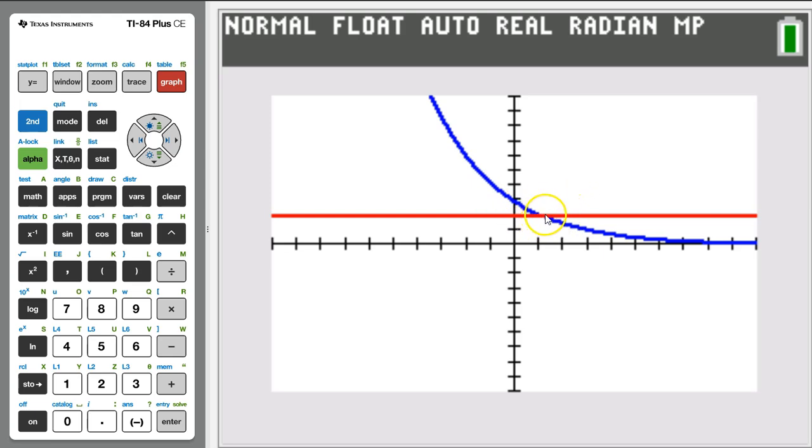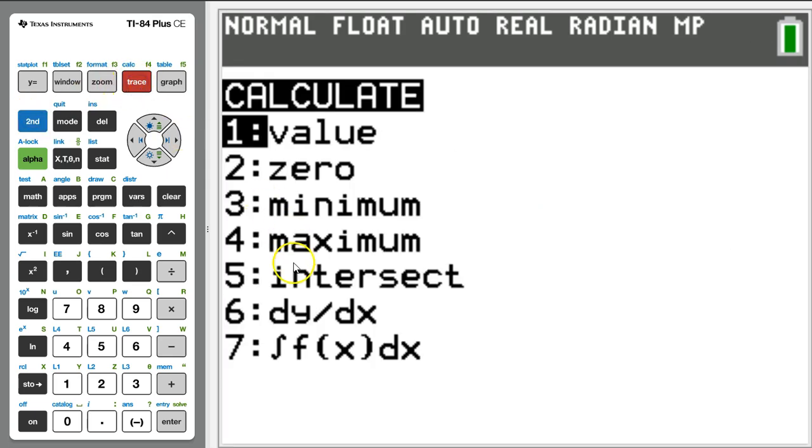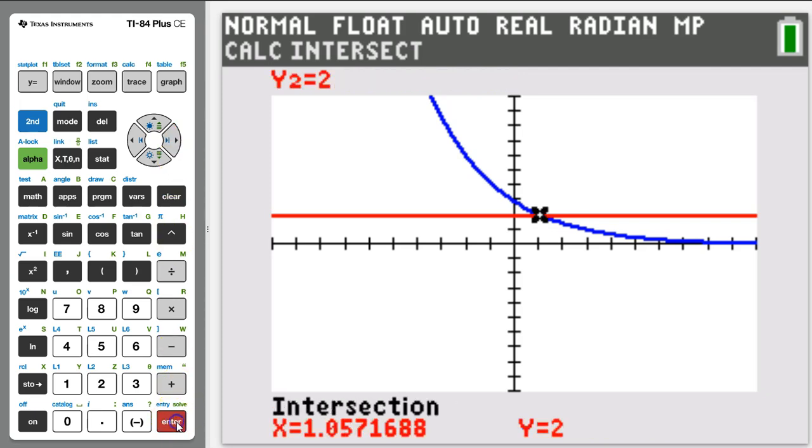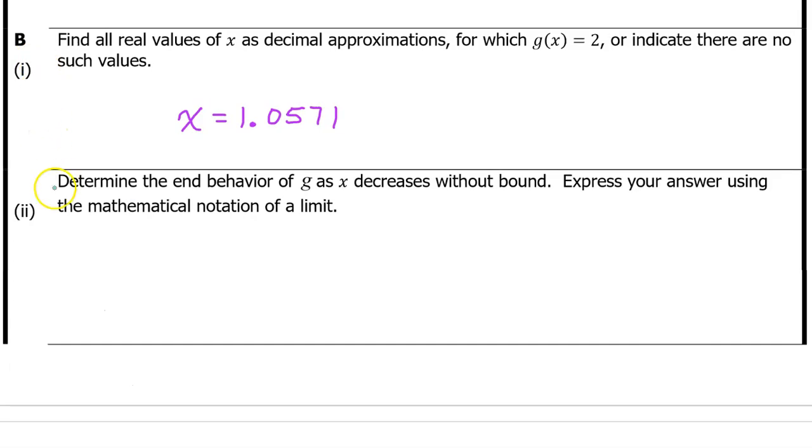So hit the graph button and let's see what we've got. The intersection point is right here. We can find it by hitting 2nd, trace, and choosing option 5 for intersect. Move the pointer as close as possible to the point of intersection and hit enter three times. Enter, enter, enter. There it is. 1.0571. B part 2.